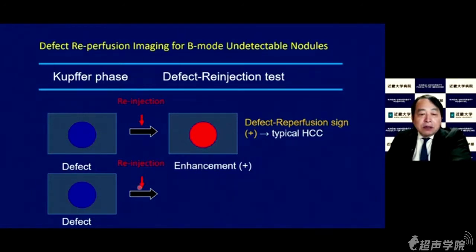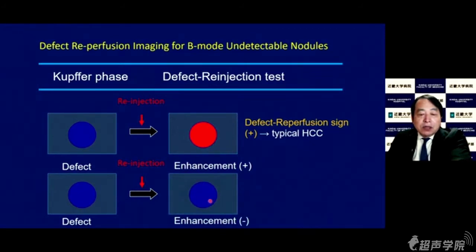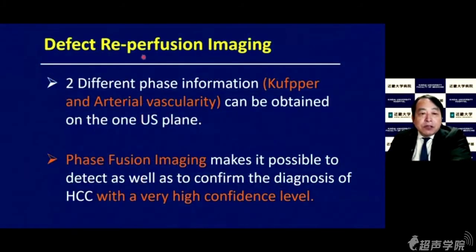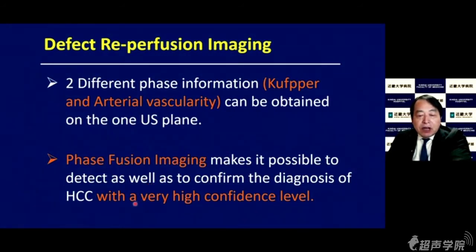However, if reinjection does not show enhancement within the defective lesion, this means no typical HCC — such as a dysplastic or regenerative nodule, or post-ablation necrotic region. So Defect Reperfusion Imaging provides two phases: Kupffer defect and arterial vascularity. Both Cooper defect and arterial vascularity can be obtained in only one arterial frame. Fusion imaging makes it possible to detect as well as confirm the diagnosis of HCC with a very high confidence level.